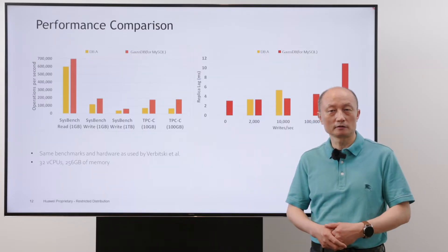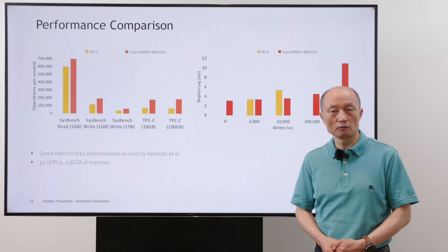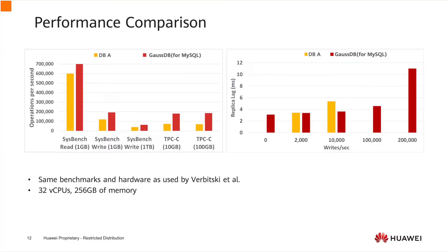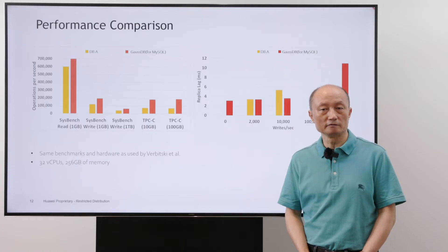The design looks good on paper — how about real performance? We compare GaussDB with competitors using the same hardware configuration. On the left side, it shows read-write performance in terms of operations per second — the higher the better. Performance results show that GaussDB is faster by a margin, ranging from 16% on sysbench for read-intensive to more than 160% on TPC-C for write-intensive operations. The right side shows replication lag — the lower the better. GaussDB lag is smaller, and the performance numbers validate the design.